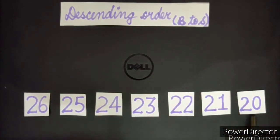So it's descending order. Decreasing order. Big to small. 26, 25, 24, 23, 22, 21, 20. So in this way, you can find out ascending order and descending order.